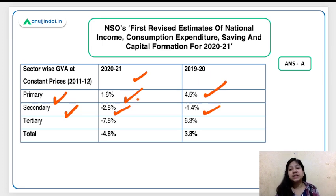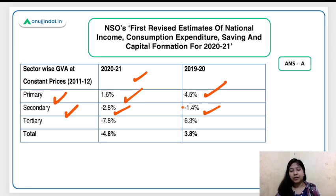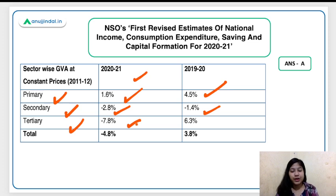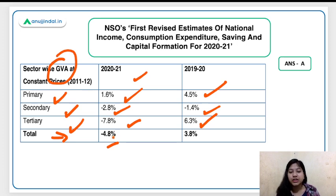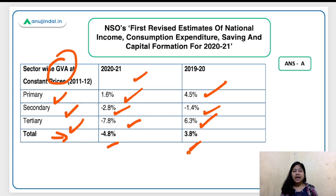The secondary sector — manufacturing — was already under pressure in FY20 with a contraction of minus 1.4 percent, and the pandemic acted as the last nail in the coffin. The tertiary sector faced the major brunt of the pandemic, with a contraction of minus 7.8 percent in FY21 versus growth of 6.3 percent in FY20. Total GVA contraction in FY21 is minus 4.8 percent, compared to growth of 3.8 percent in FY20.